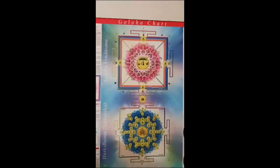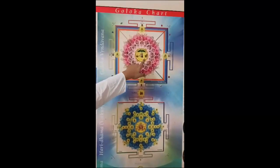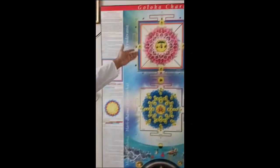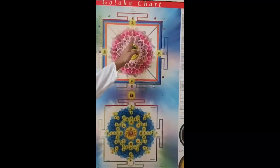Goloka Dham, at the very top, looks like a lotus with beautiful petals. This Goloka Dham has two chambers: one is Goloka Brindavan and one is Goloka Navadip. Krishna is not an avatar — Krishna is the source of all incarnations, the fountainhead of all incarnations.